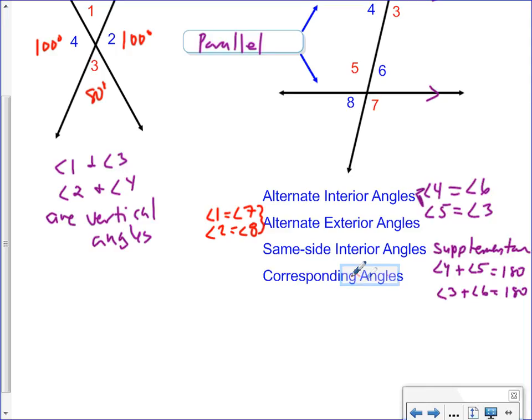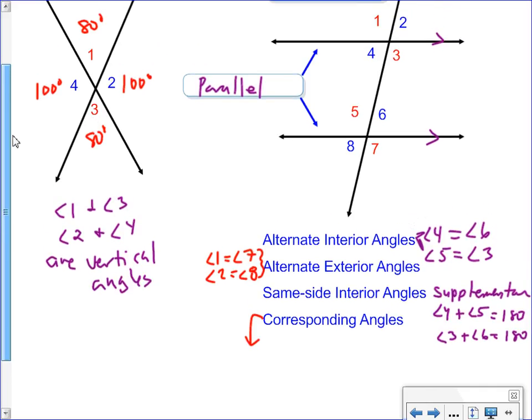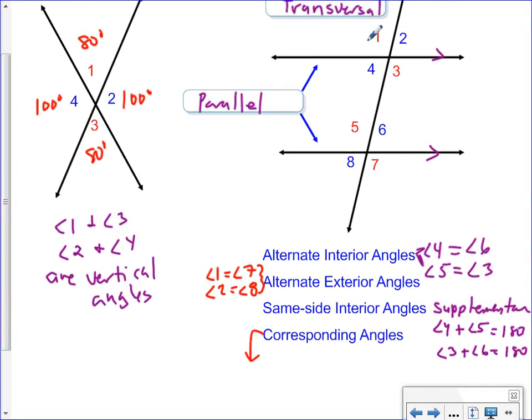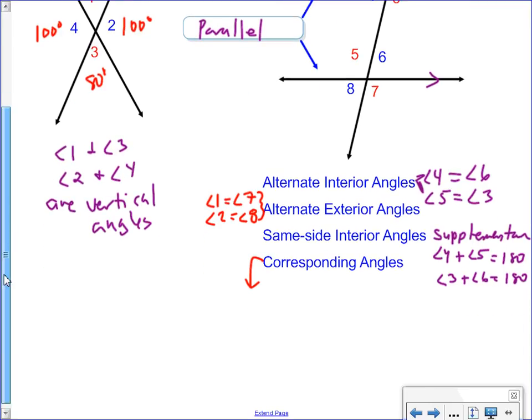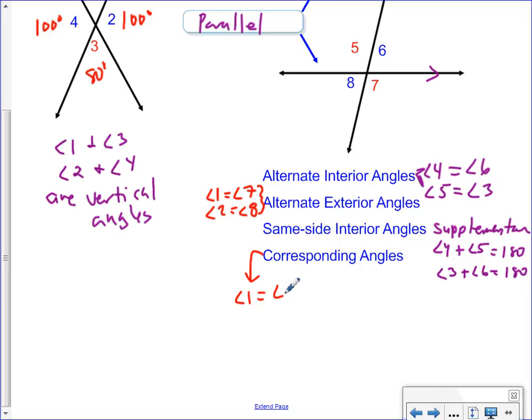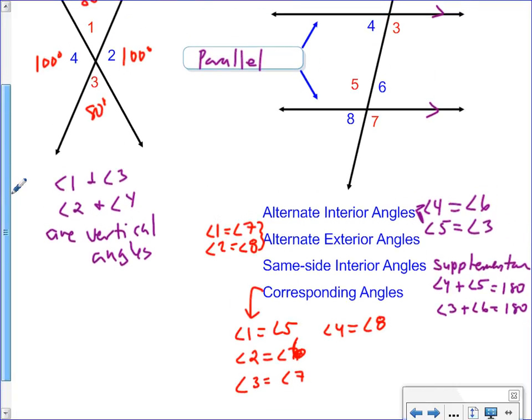Last but not least, corresponding angles. Corresponding angles have the same spot on the other line. For example, number one is the top left corner, so the corresponding angle would be number five. Exactly. And notice that they are the same color, so that means the measures are the same. Angle one equals angle five. What else? Let's go in order. Angle two is the same as six. Angle three is... angle seven. And angle four is the same as angle eight.